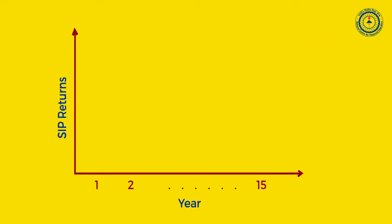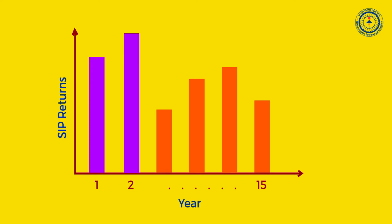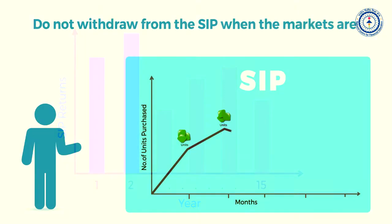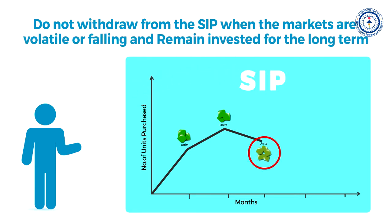While choosing a SIP, remember to look for schemes whose performance has been consistent over the long term and do not go by the past one-year returns. One must also keep in mind that if the market falls, one must not exit the SIP but remain invested to reap the benefits of getting more units for the same amount.